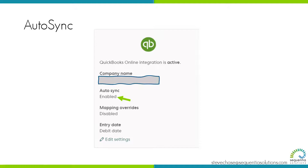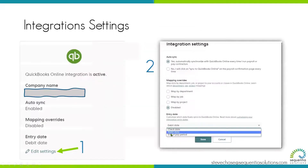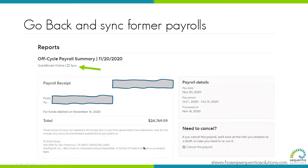If you prefer to not have auto-sync enabled, you can update the settings to say no — you will click the sync button to QuickBooks Online for every time you'd like it to happen. Also, when you're in the edit settings, you have the ability to select the date of the payroll journal entry that pushes over: check date, debit date, or the end of the pay period. The default is the debit date, which is the date that it comes out of your bank account.